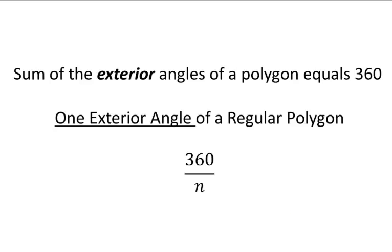Because of this, we again have special rules for regular polygons. If you want just one exterior angle of a regular polygon, you just take 360 divided by n.